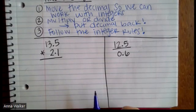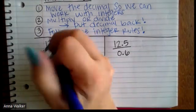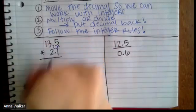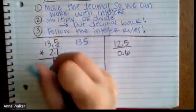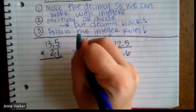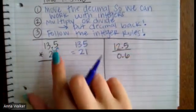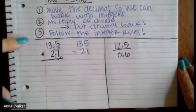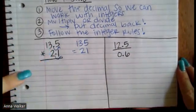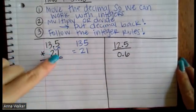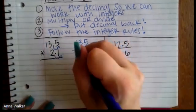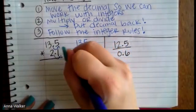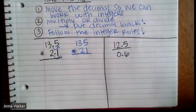We have 13.5 times 2.1. Well, I can move my decimal one spot over to make 135, and then I can also move it one spot over to make 21. I want to make sure that I move the decimal the same amount of spaces in both. And so because these both only have one decimal place, it's very easy to make the integers. So this is the new problem we're going to work with, 135 times 21.